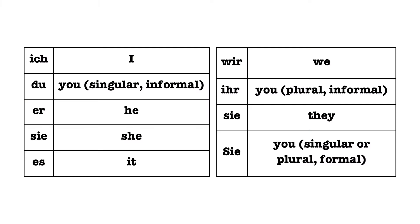When you first start learning German, one of the first things that you're introduced to are personal pronouns. These are things like 'ich' for I and 'er' for he. Generally, the list includes the following nine words: ich, du, er, sie, es, wir, ihr, sie, and sie. Three of those are S-I-E.